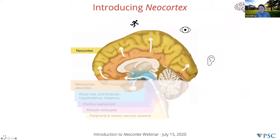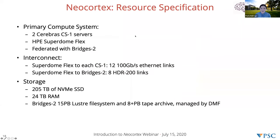NeoCortex, as you might have imagined, was inspired by the part of our brain known to have evolved more recently and is involved with the processing of sensory data including visual data, audio data, and decisions such as body movement. We are aiming and hoping that with our system we will enable something similar to what this part of our brain does — taking a lot of sensory data and helping make decisions and produce great results in a specific machine learning task. So now let's talk about the resource specifications, and here I would like to hand over to Nick.